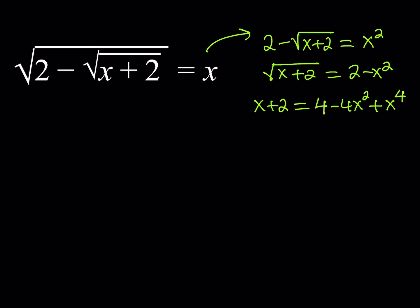We end up getting a quartic equation. Quartic equations have a formula, which is quite complicated — they depend on cubic equations and so forth. But let's go ahead and put everything on the same side and see what that looks like. x to the fourth minus 4x squared, and then bringing the x over and the 2 over, that gives us a positive 2. So this is going to be our equation.